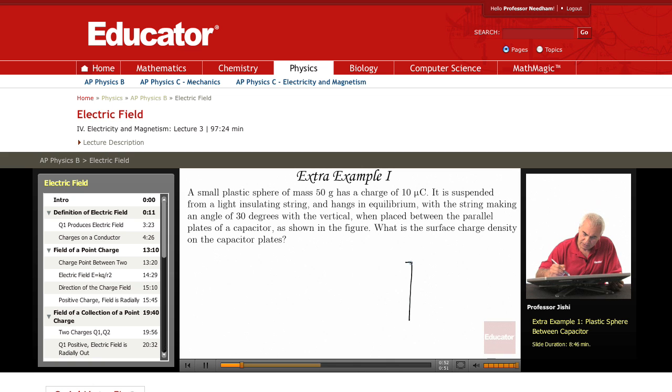The plates of a capacitor, one plate is plus one is minus, is a constant electric field between the plates.